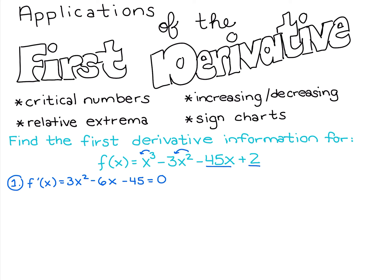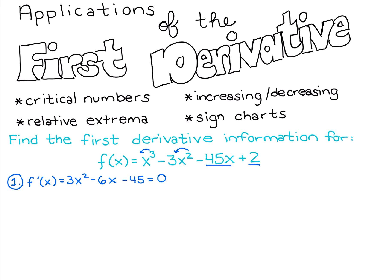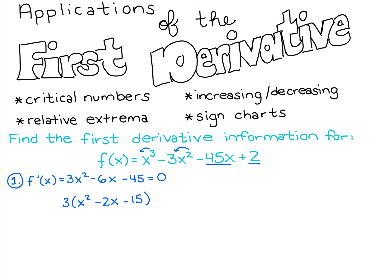Since this has an x² and an x in it, I'm going to try to factor this to solve it. I can pull a 3 out from everything. There's no least power of x to pull out — there's not an x on the 45 — so I'll just pull out a 3. That gives us 3(x² - 2x - 15). We can verify: 3x² - 6x - 45, so we factored that out correctly.